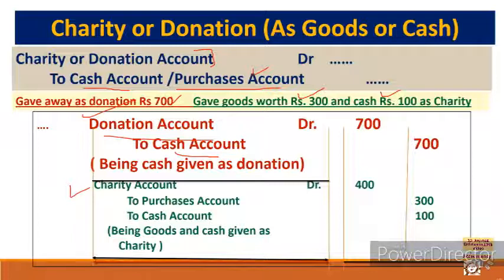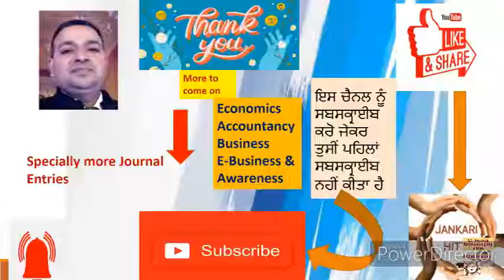Another example: gave goods worth rupees 300 and cash rupees 100 as charity. Charity account debit 400 total. Goods going out — purchase account credit 300. Cash going out — cash account credit 100. Total charity = 400. This is a compound entry because more than two accounts are affected. Narration: being goods and cash given as charity.